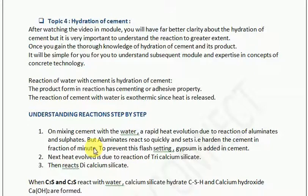As soon as we add water to cement, the aluminate in the cement starts reacting and it sets quickly within a fraction of a second. So we must add something to retard this, because at the construction site when we add water to cement, we need sufficient time to carry and place it in the required location. There must be something added to cement to prevent this immediate reaction.